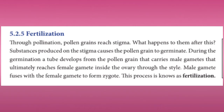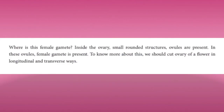Through pollination, pollen grains reach the stigma. A substance produced on the stigma causes the pollen grains to germinate. During germination, a tube develops from the pollen grain that carries male gametes, which ultimately reaches the female gamete inside the ovary through the style. The male gamete fuses with the female gamete to form a zygote. This process is known as fertilization.